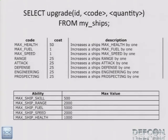So you've got these awesome ships, but you want them to be better — you want that 'size matters' award maybe. There are a lot of upgrades you can do: health, fuel, speed, range — range is a good one — attack, defense, engineering, and prospecting. Prospecting is your mining skill. Every skill does have a limit you can upgrade it to. Attack, defense, engineering, and prospecting have a limit of 500 total. Everything else has its own limit — it's right there on the slide and also on the CD if you want to reference it.